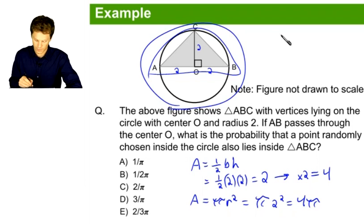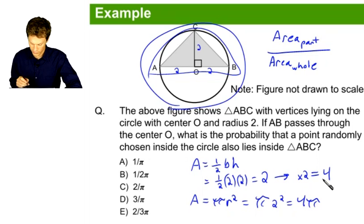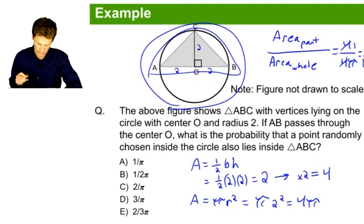As I said before, we want to find the area of the part divided by the area of the whole. We know that those numbers now are 4 and 4 pi, so that's the answer we're looking for here. And of course, 4 divided by 4, we can just substitute 1, and we get 1 over pi as the answer to our calculation here, which is, fortunately, answer choice A.